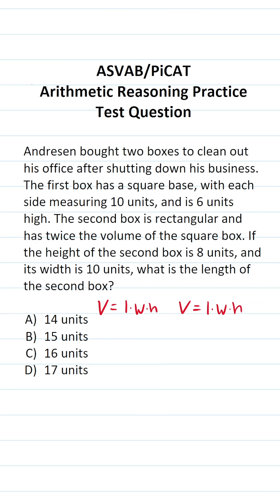Let's calculate the volume of the first box. We know it has a square base, so its length and width are going to be the same value. Its base is 10 by 10, and it has a height of 6. 10 times 10 is 100. 100 times 6 is 600. So its volume is 600 cubic units.